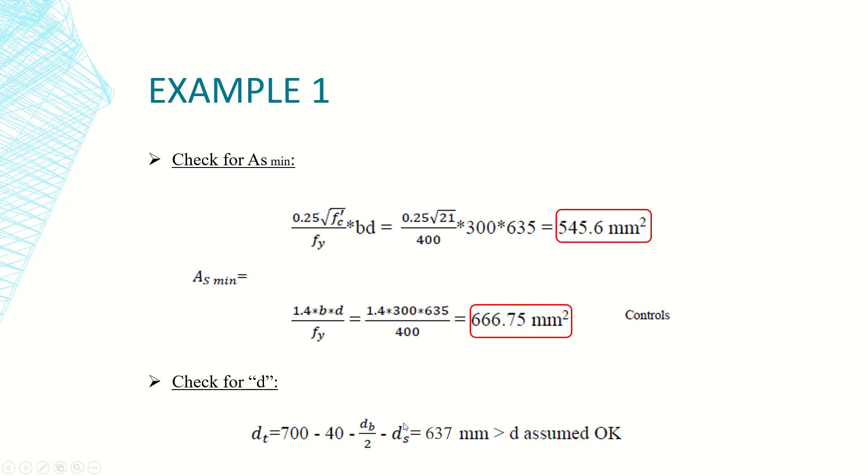So actual d equals 700 minus clear cover, we assumed it 40 from the code, minus one stirrup, we use like for example 10 millimeter diameter stirrups as shear reinforcement, minus half flexure rebar, we use 25 so minus 25 over 2. This answer will be equal to 637 millimeters. It's still greater than 635 so we are on the safe side. This is the check for d.